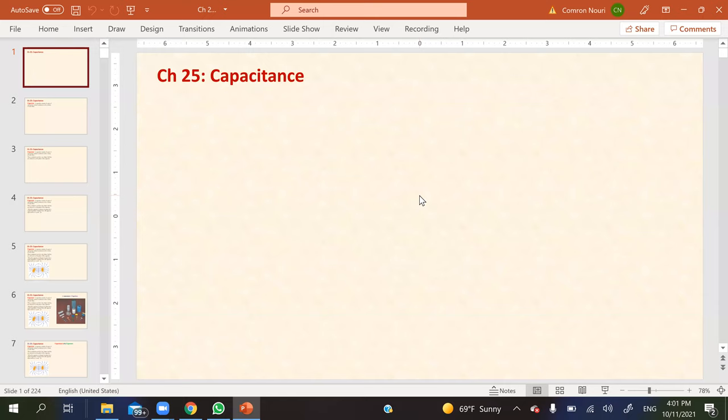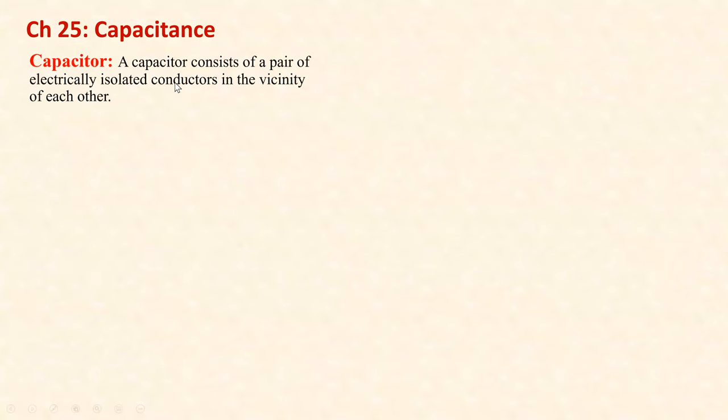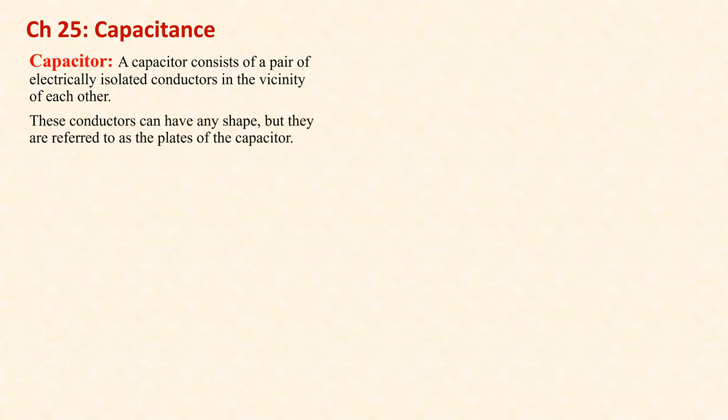Chapter 25 on capacitors. We are going to define capacitor and capacitance, using a lot of information from the last chapter on electric potential. By definition, a capacitor consists of a pair of electrically isolated conductors in the vicinity of each other. If you have two conductors close to each other, you have a capacitor. These conductors can have any shape, but they are referred to as the plates of the capacitor.